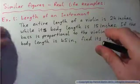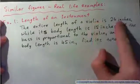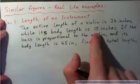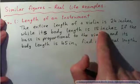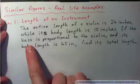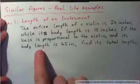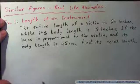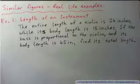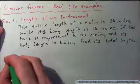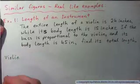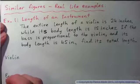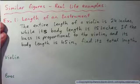So example 1, if the entire length of a violin is 24 inches while its body length is 15 inches, and then if the bass is proportional to the violin and its body length is 45 inches, find its total length. So I'll just really quickly try and draw a quick picture to show you what this means. Here's a violin, and then we're going to have a bass. So they're the same shape instrument exactly, one's bigger than the other though.